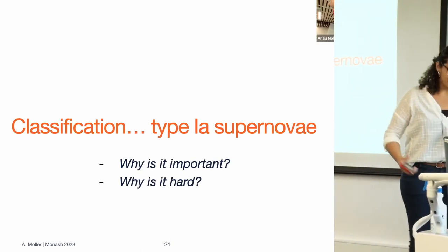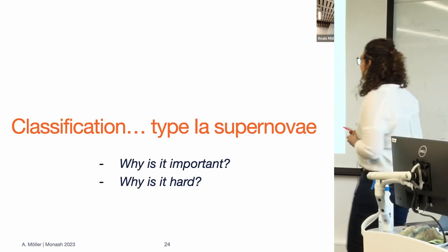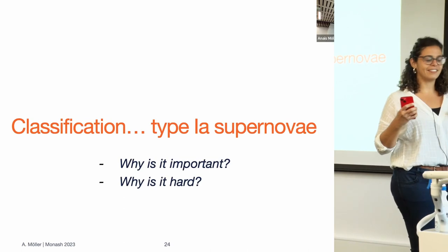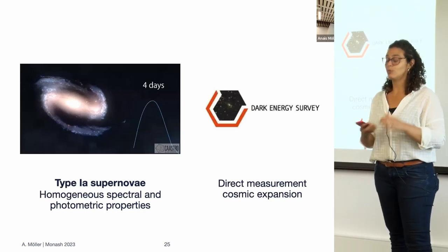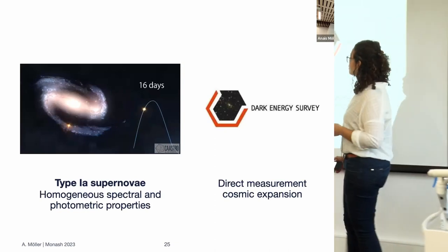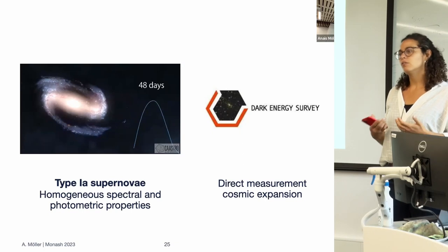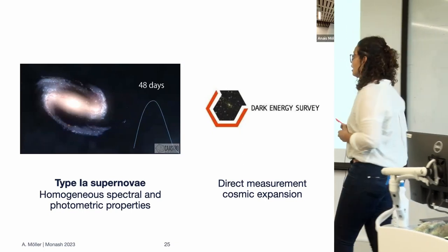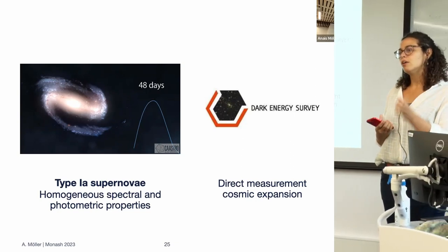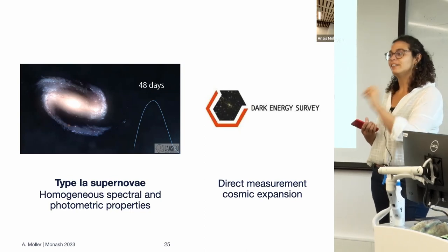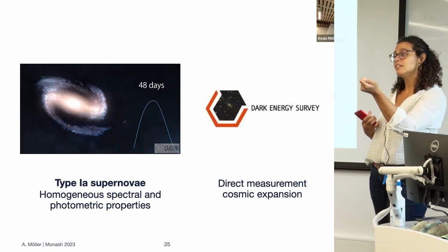Going back a bit, I want to tell you about classification — why it's important and why it's hard. Type Ia supernovae have interested me for a long time; I am a cosmologist by formation, and I have been using them to study how the universe is becoming bigger. These are very bright exploding stars that can shine like millions of stars in a galaxy. With a magnitude depth of 24.5, we can go to redshift 1.3 for Type Ia supernovae. They are standard candles — we know approximately how bright they shine when they explode — so we can use them to measure distances and how the universe is expanding.